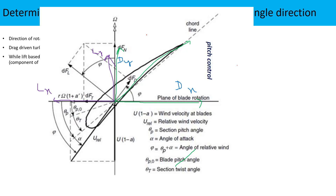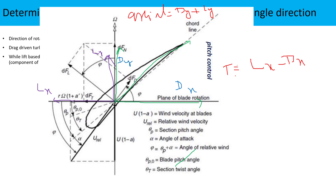Based on this axial force we design the structure of the wind turbine. The axial force equals the drag y-component plus the lift y-component. The torque value depends on the force in the direction of rotation, so torque equals L_x minus D_x. Because the lift x-component is larger than the drag x-component, the direction of rotation will remain in the same direction.